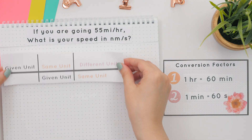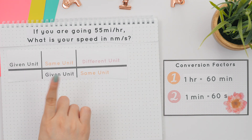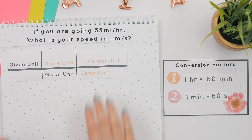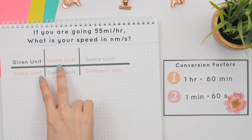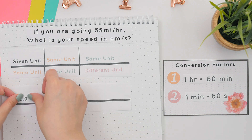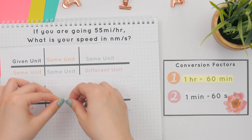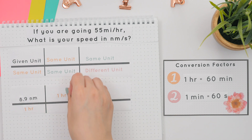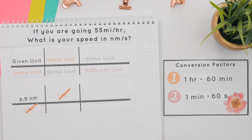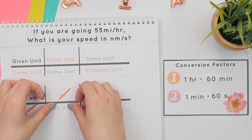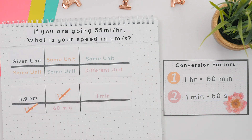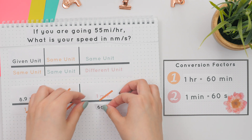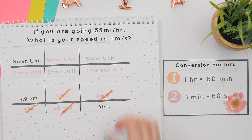Now this is a tiny bit different — we won't align the units the same way as before; instead we will align them so the bottom unit of hours can cancel. We will use our first conversion factor and align the hours so they can cancel, so now we're at minutes. Using the second conversion factor, align the minutes across from each other so they can cancel, and we're left with seconds on the bottom and nanometers on top, which is what we wanted.